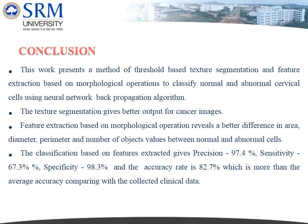In conclusion, this project presents a method of threshold-based texture segmentation and feature extraction based on morphological operations to classify normal and abnormal cervical cells using a neural network back-propagation algorithm. Feature extraction based on morphological operations reveals better differences in area, diameter, perimeter, and number of objects between normal and abnormal cells. The classification gives precision of 97.4%, sensitivity of 67.3%, specificity of 98.3%, and an accuracy rate of 82.7%, which is above the average accuracy compared with collected clinical data.